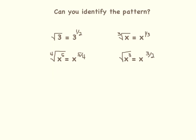Here you will see four equations. In each equation, the term on the left side of the equation is in radical form, and the term on the right side is in rational form. Because these are equations, we know the left side is equal to the right side. So I want you to look at each one carefully — can you identify the pattern?